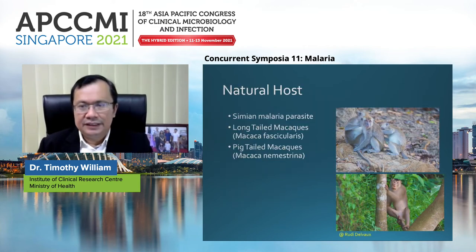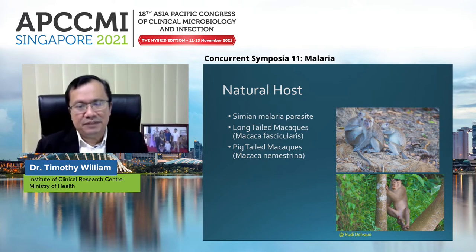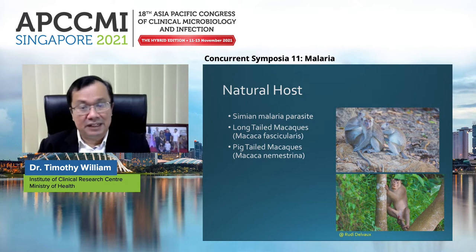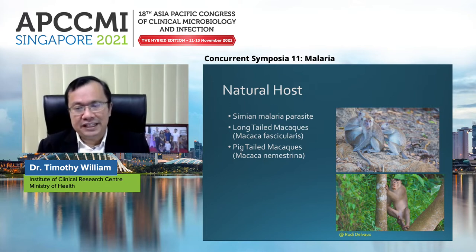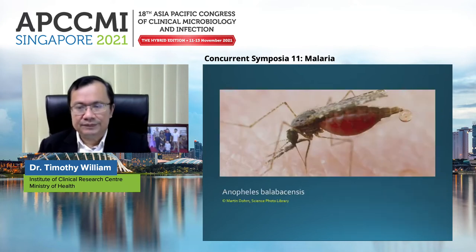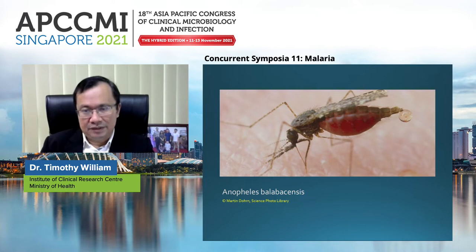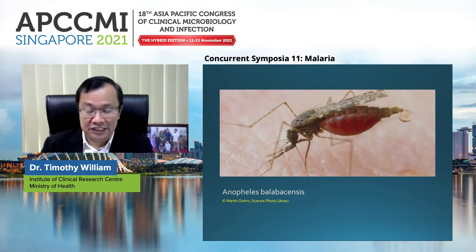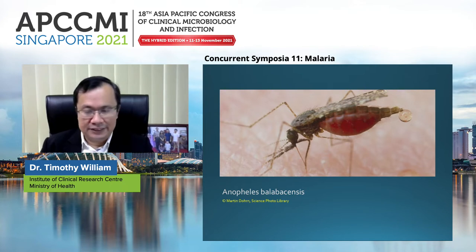The natural host is a simian malaria parasite, found mainly in the long-tailed macaques. These macaques are found everywhere in Southeast Asia — in Malaysia, in Singapore — and also the pigtail macaques, or Macaca nemestrina. This is a picture of the Anopheles balabacensis mosquito vector, which is found mainly in Malaysia, especially in Borneo, and this is the main vector for Plasmodium knowlesi.